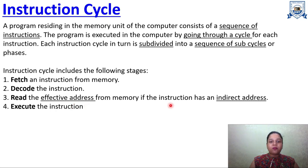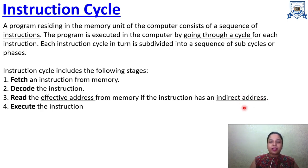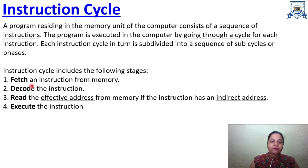Third is reading the effective address from memory if the instruction has an indirect address. For example, if you have used the concept of pointers, there is an address at which the value resides — that type of addressing is known as indirect addressing. It means the value is at some address, and you have given that address. Fourth is Execute — whatever instruction you have given, once decoded and values are read, the instruction is executed.